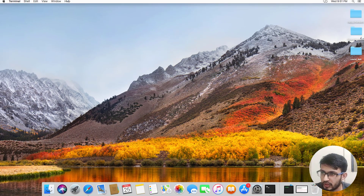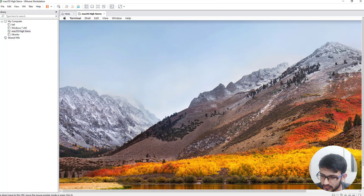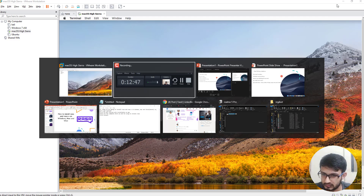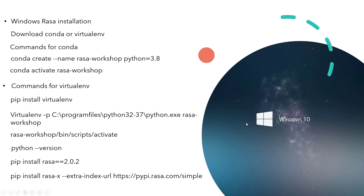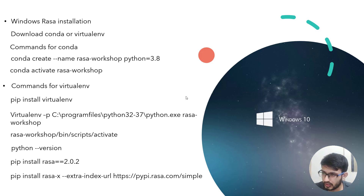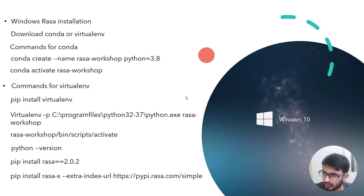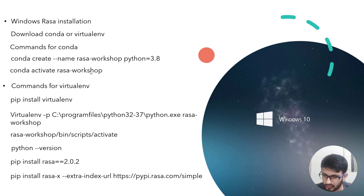It's time for Windows. We will move ahead with RASAX installation on Windows. This will be done with Conda or a virtual environment. If you are using Conda, make sure your machine supports it properly since it's heavy software. For virtual environment, virtualenv really helps - even if you have only 4GB RAM it won't put much load on your machine. So this helps for low-end machines.